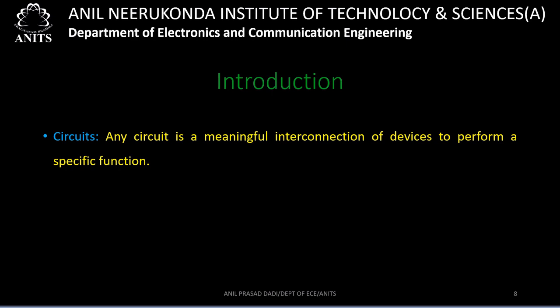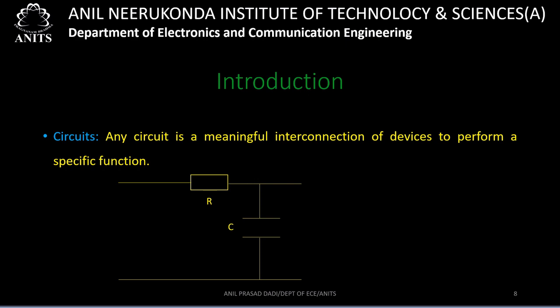The next term is 'circuit.' A circuit is a meaningful interconnection of devices to perform a specific function. For example, consider elements R and C — a resistor and a capacitor. We apply the input vi(t) across the two input terminals and take the output v₀(t) across the capacitor. This is a simple RC circuit example.